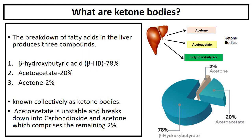What are ketone bodies? The breakdown of fatty acids in the liver produces three compounds: beta-hydroxybutyric acid, acetoacetate, and acetone. These three are collectively known as ketone bodies. Beta-hydroxybutyric acid comprises approximately 78%, and acetoacetate is approximately 20% of the ketone bodies. Acetoacetate is unstable and breaks down into carbon dioxide and acetone, which comprises the remaining 2%.